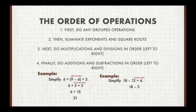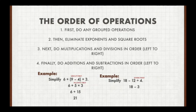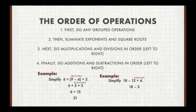Here's another example: 18 minus 12 divided by 4. We're going to do the division first because there are no grouped numbers, no exponents, no square roots. The next step on the list is division. We don't do 18 minus 12 first because subtraction happens last. So we do 12 divided by 4, which is 3, then 18 minus 3, and that gives us 15.